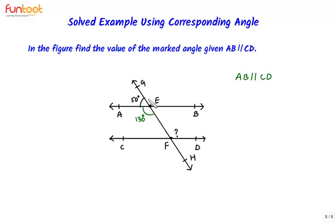Now if we use the property of vertically opposite angles, then this angle will be equal to this angle. So this angle will also be 130 degrees because we know that vertically opposite angles are equal.